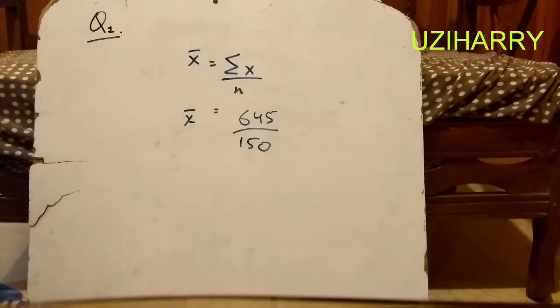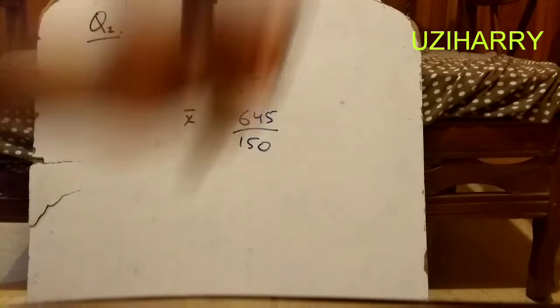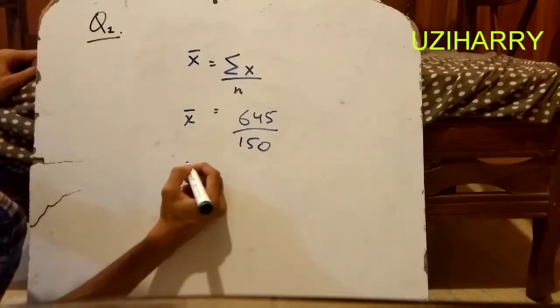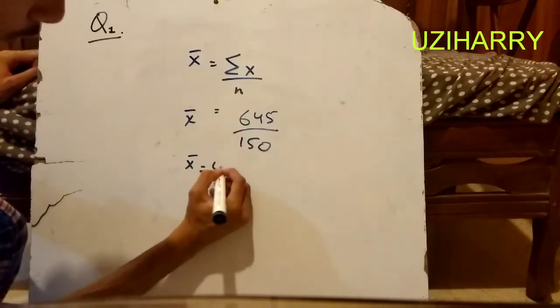I am just putting the value into the calculator to find the mean. 645 divided by 150 equals 4.3. The mean is 4.3.